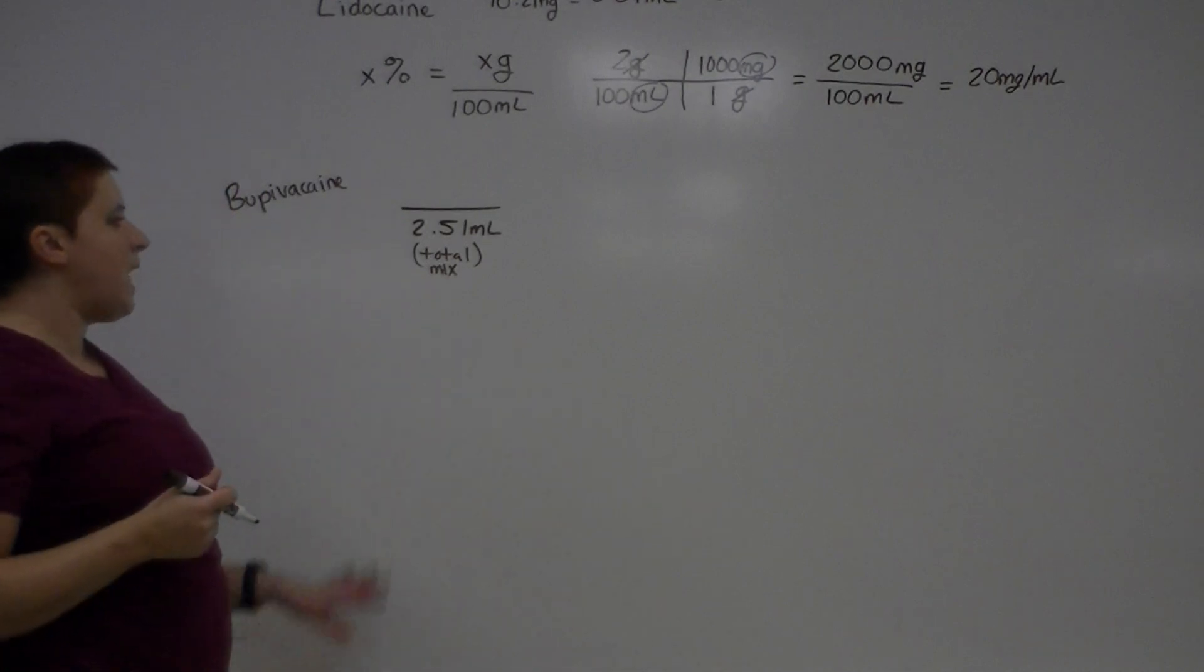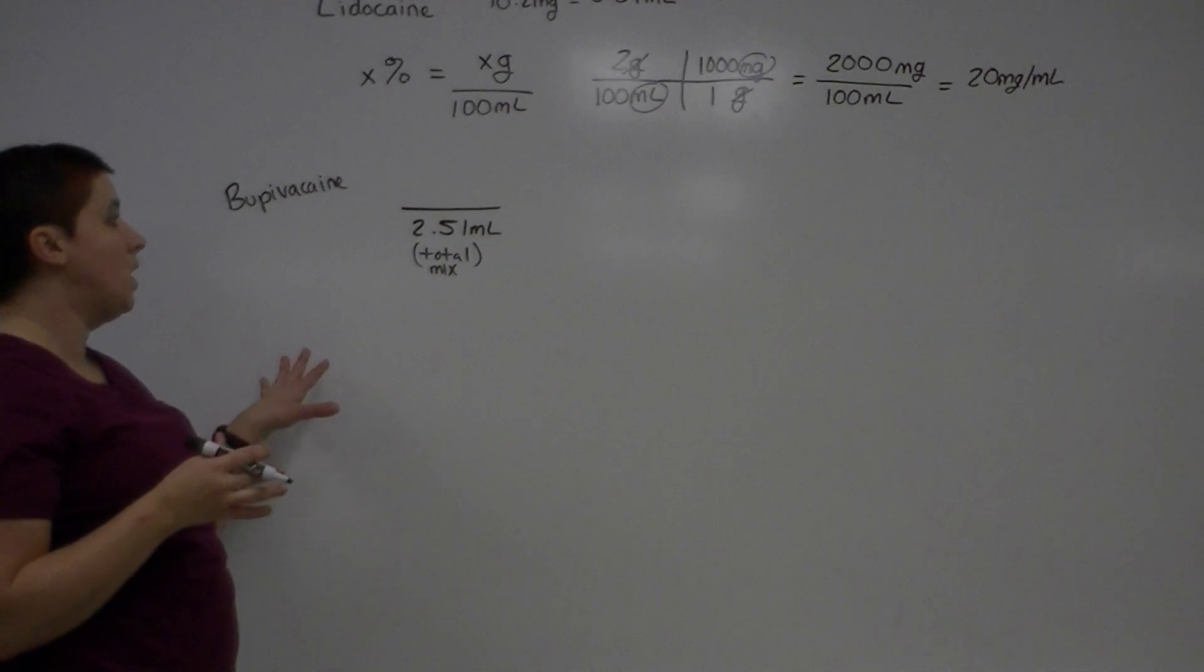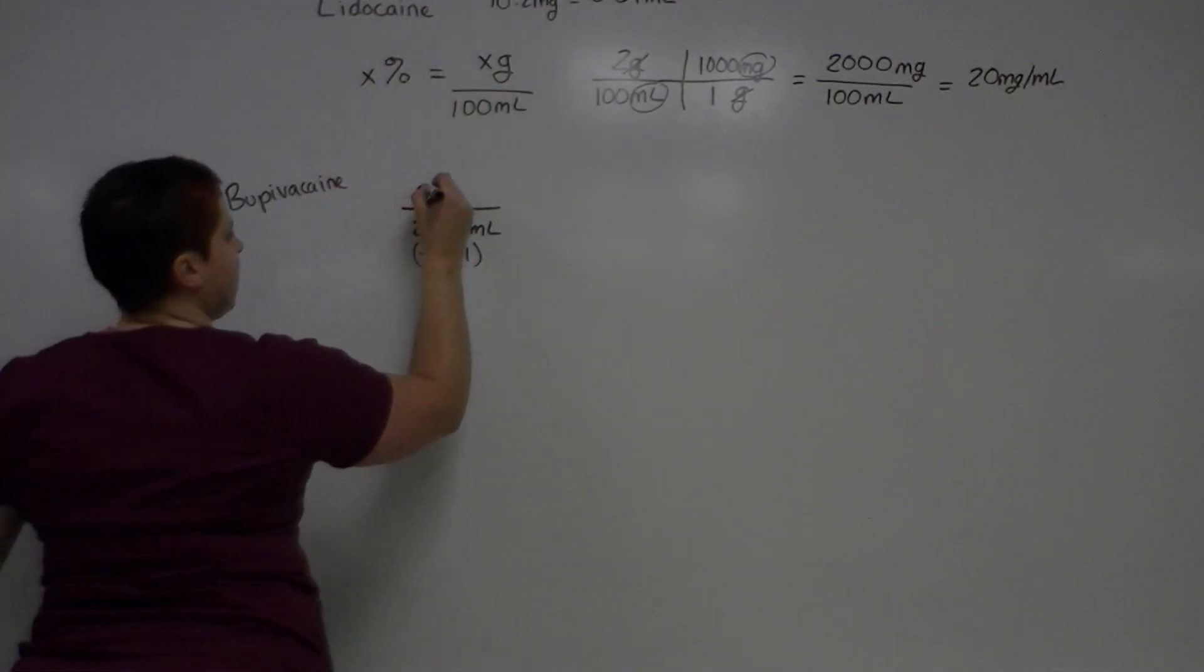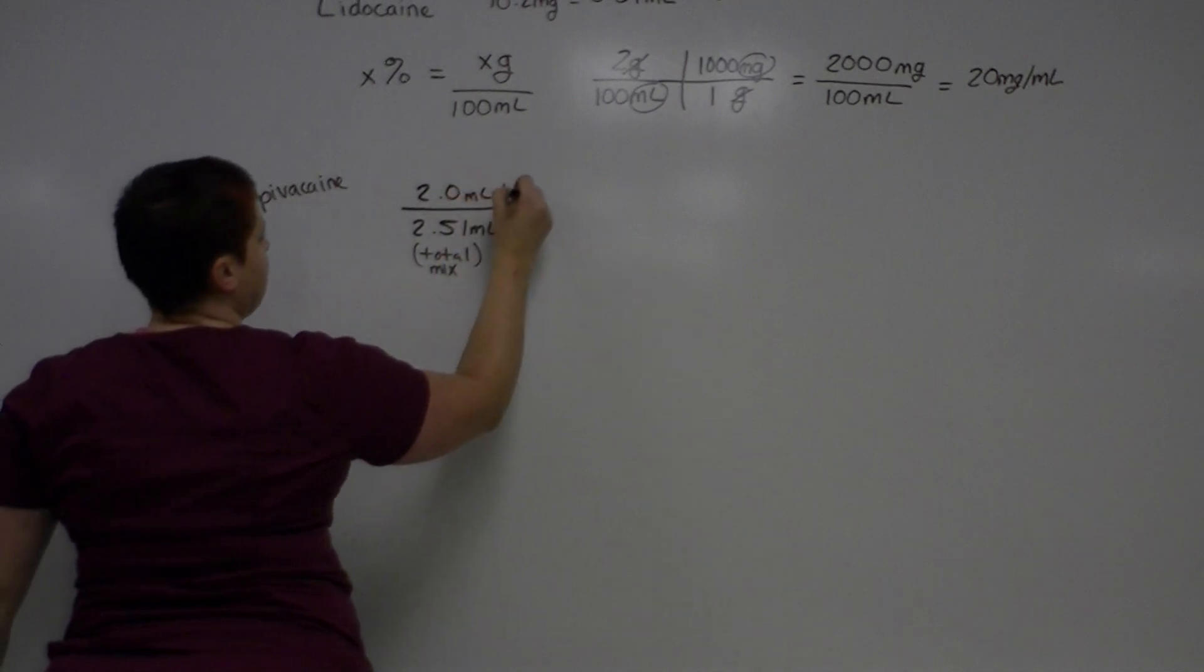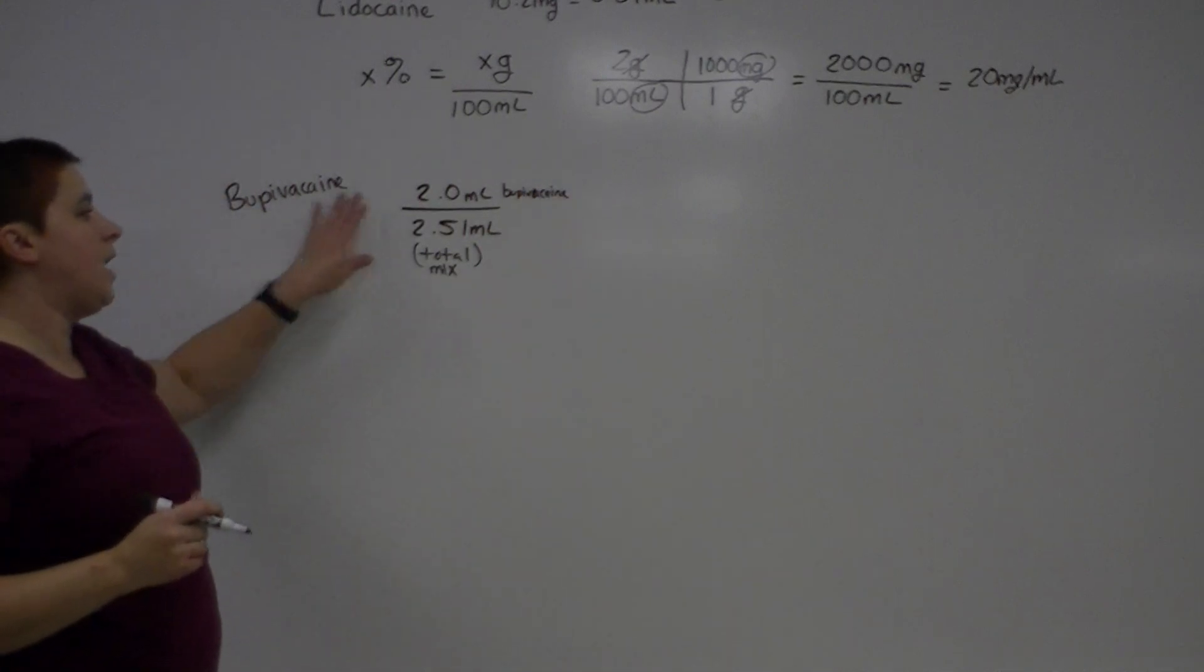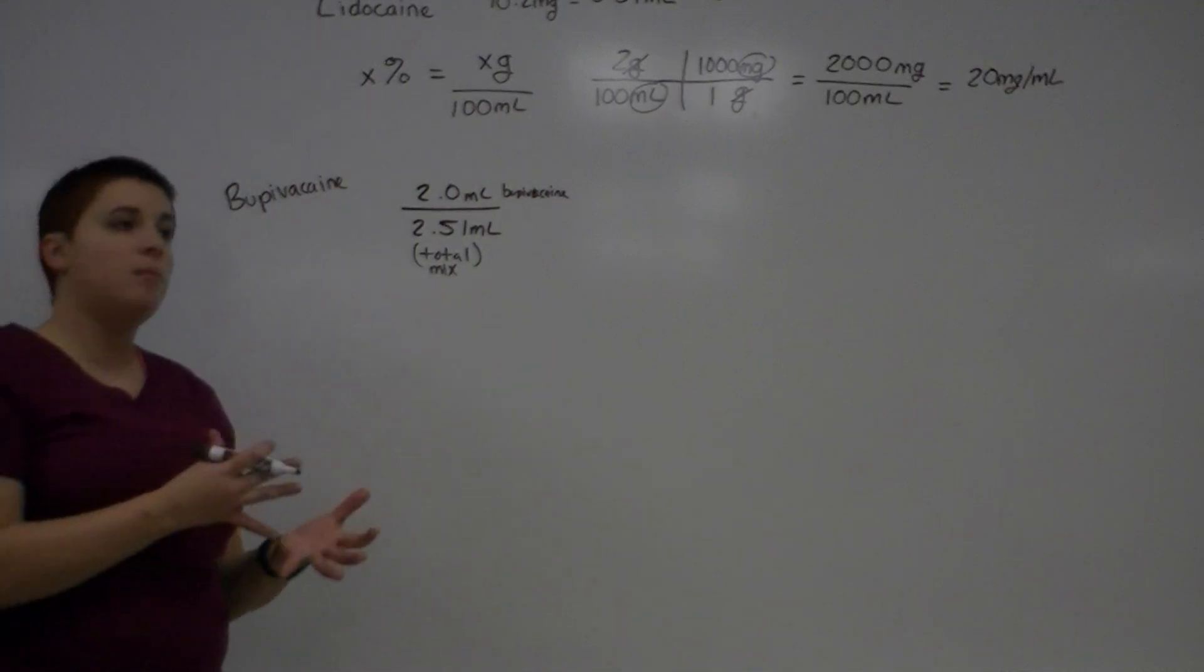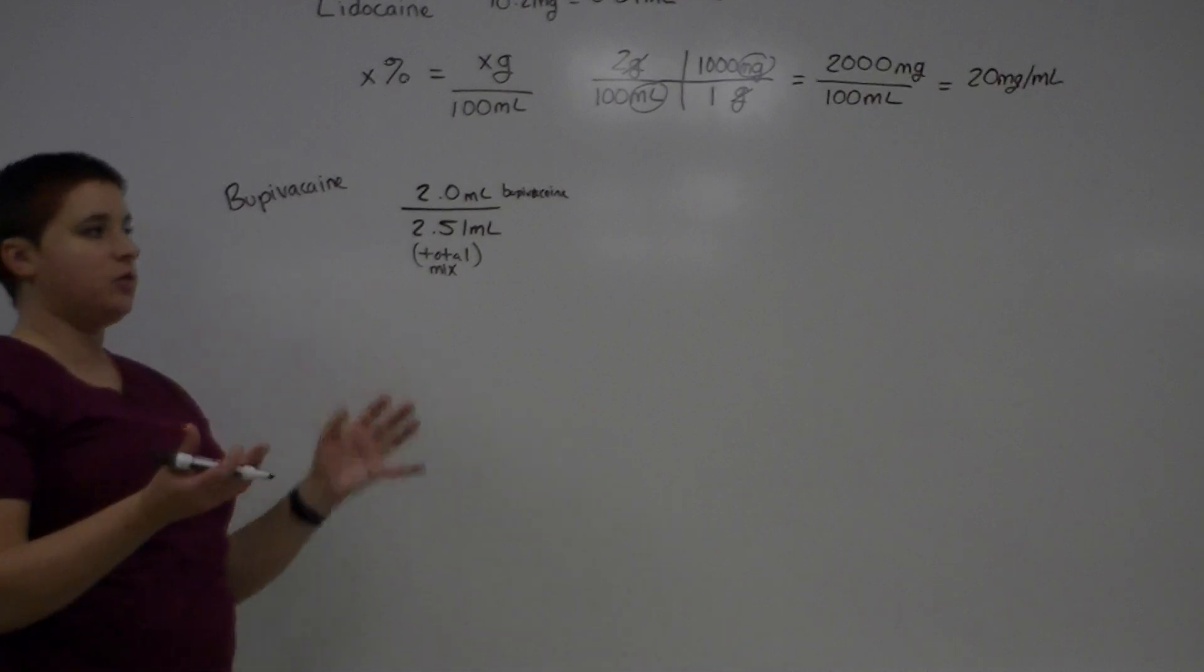So you just need to decide which one you're going to do. You want to start with one, either bupivacaine or lidocaine. I tend to start with bupivacaine. So I'll just make a note here that I'm doing bupivacaine. So this is my total for my mix. So then I need to ask myself, out of the total of the combined drug, how much of that drug was bupivacaine? And I know right here, because I know how much I drew up of bupivacaine. So it's 2.0 milliliters of bupivacaine.